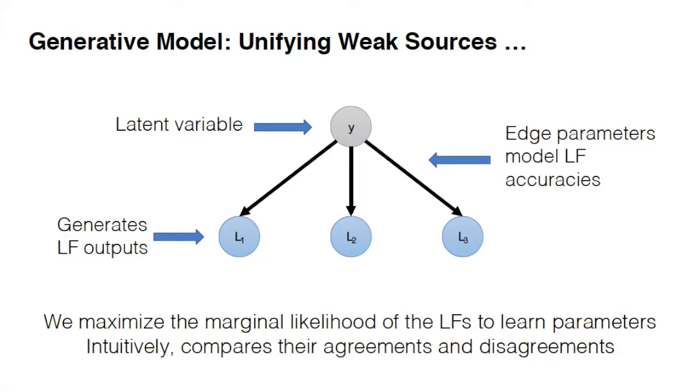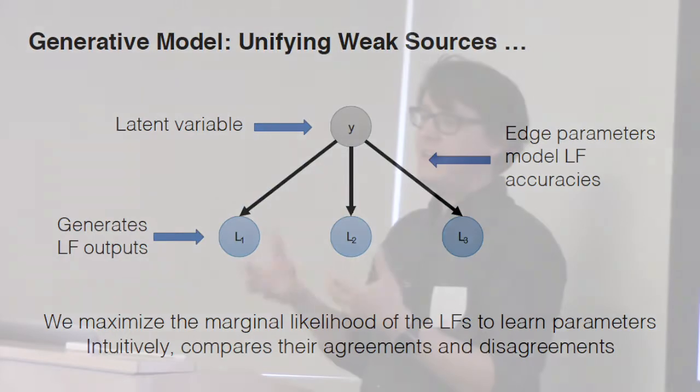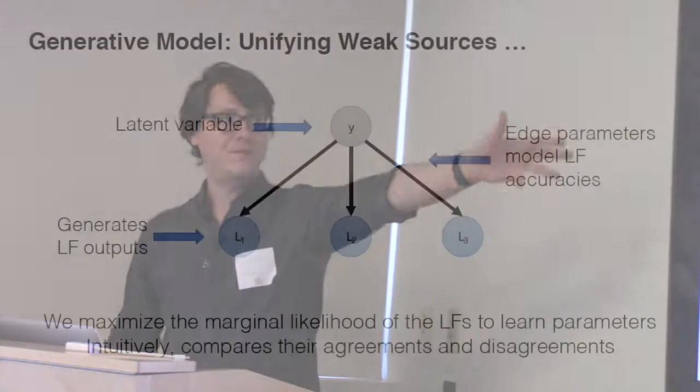The big intuition is that if a labeling function tends to agree with the majority vote, you tend to trust it more than a contrarian labeling function that tends to not vote with the majority. And how that actually plays out in the sparse labeling space of how labeling functions really are, it can get complicated. But that's the general intuition behind how the generative model works.